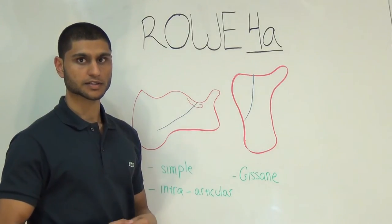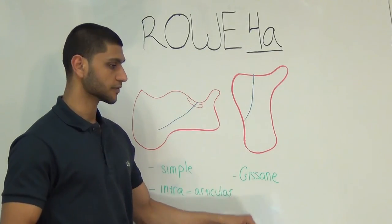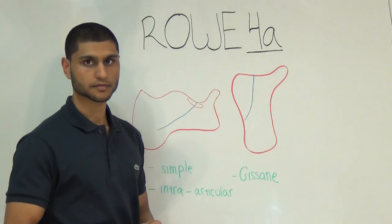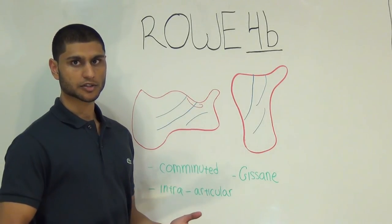Rowe 4a is a simple intra-articular fracture, so measuring the critical angle of Gissane may be helpful. Rowe 4b is a comminuted intra-articular fracture.